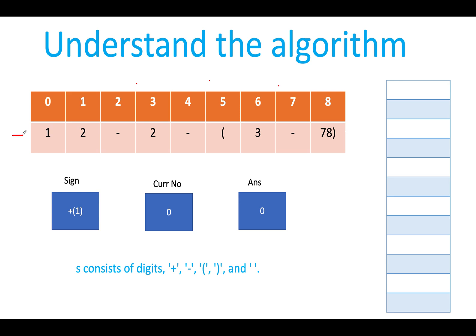I've taken a slightly different example. The expression is something like: 12 minus 2 minus (3 - 78). I have three variables: the sign variable holding the current sign (default positive, represented by 1), the current number under evaluation, and the answer variable. There is also a stack of integer type to store intermediate results and signs.